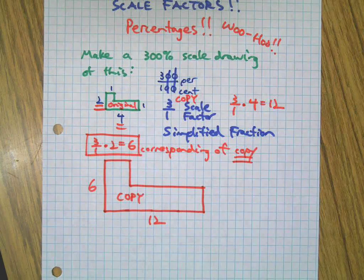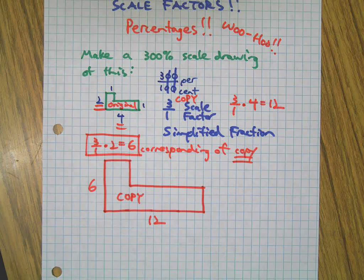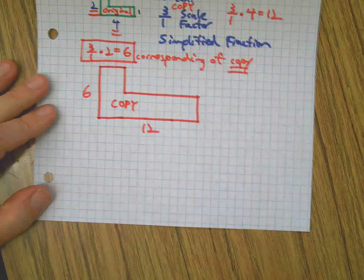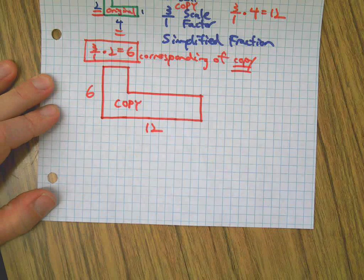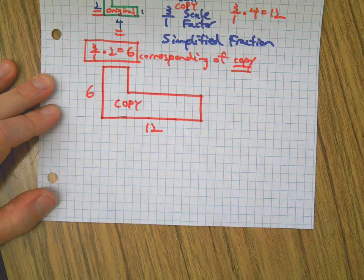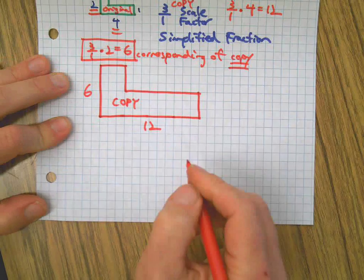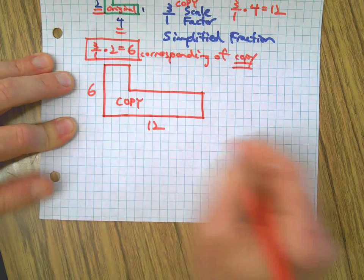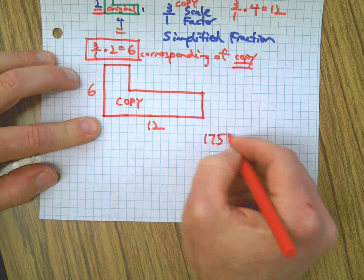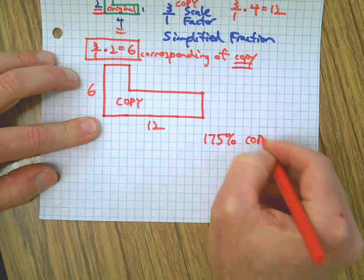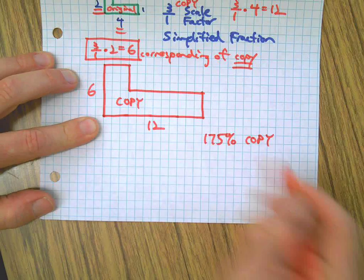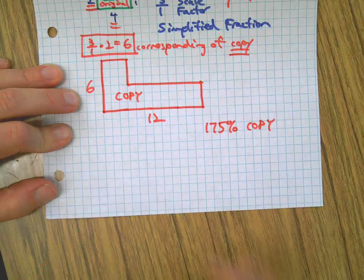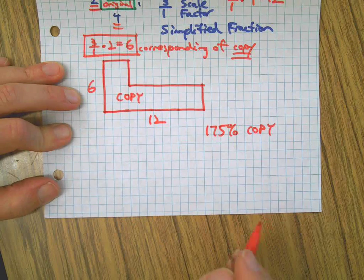Okay, now sometimes it's not so easy. Like this 300% example is super easy. Let's say you were asked to make a 175% copy. Okay, and we'll do another example too.